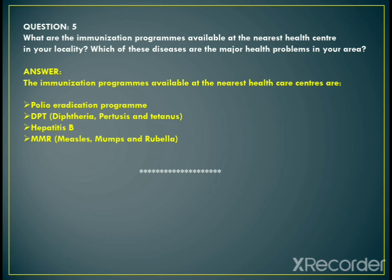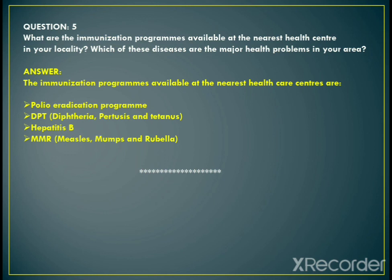Question number 5: What are the immunization programs available at the nearest health center in your locality? Which of these diseases are the major health problem in your area? The immunization programs will differ according to the area. Common programs include: the polio eradication program; the DPT — diphtheria, pertussis, tetanus program; the hepatitis B vaccine; and MMR — measles, mumps, rubella. These injections are commonly given to children before age 11, though they differ according to the area or health center.